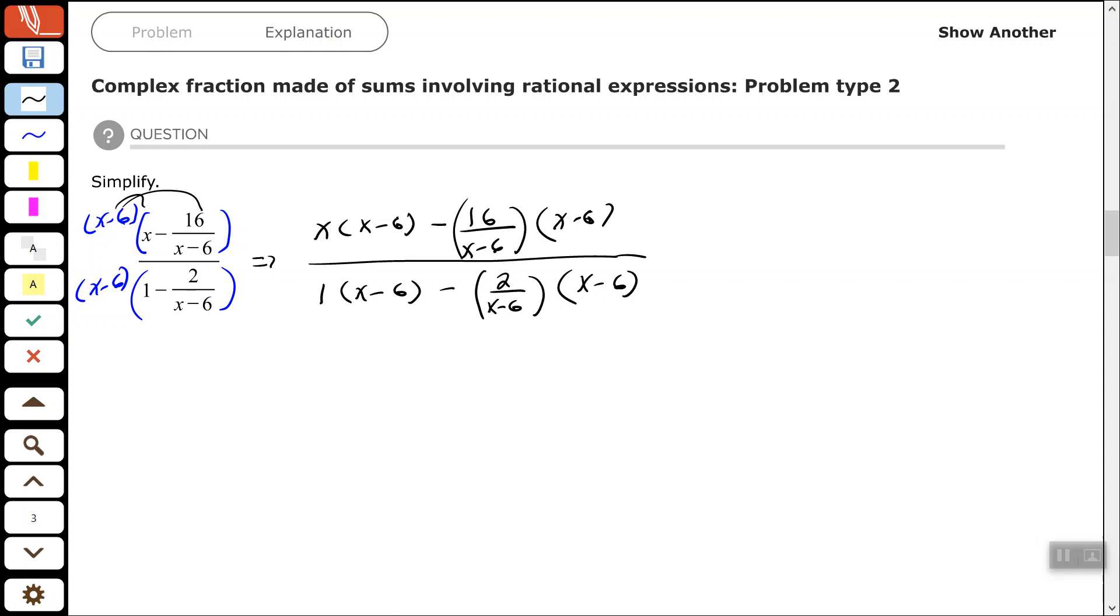Alright, so once we distribute that, we just start simplifying. So first, the thing I can do is use my distributed property here. So I have x squared minus 6x. Now here, on the second part, I want to cancel those x minus 6s because I have 1 in my numerator and 1 in my denominator, and that's the whole purpose of us multiplying by that least common denominator. So that gives us minus 16.